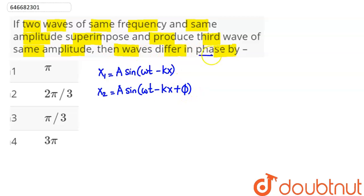The resultant is xᵣ = x₁ + x₂. On superposition, the resultant amplitude equals the individual waves' amplitude.